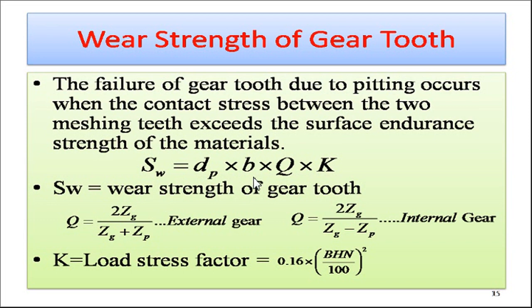The wear strength equation is Sw equals dp times b times q times k, where dp is the diameter of the pinion, b is the face width of the pinion or gear, q is the ratio factor between the pinion and gear, and k is the load stress factor. We use dp because the diameter of pinion is always smaller than the gear. When the pinion rotates, if the gear ratio is 4, the pinion has more possibility of getting wear, so the diameter of pinion is considered here.